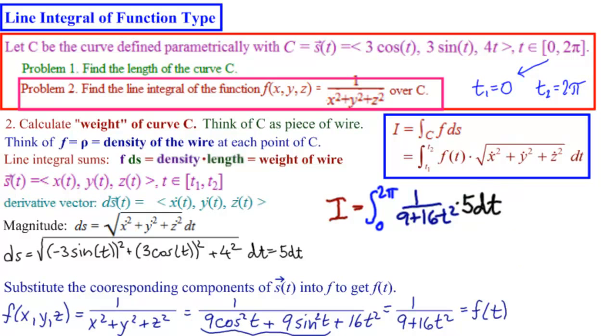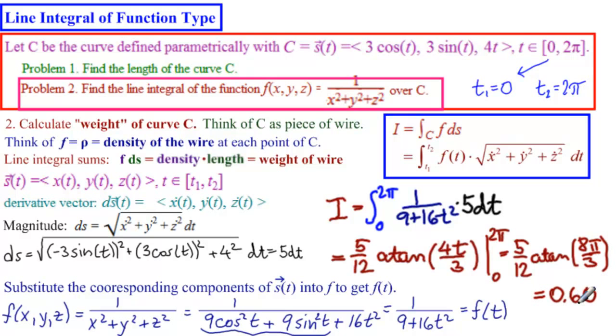And this is equal to 5 twelfths arctan, or inverse tangent, of 4t over 3 from 0 to 2π, which is 5 twelfths arctan of 8π over 3, which is approximately equal to 0.60.